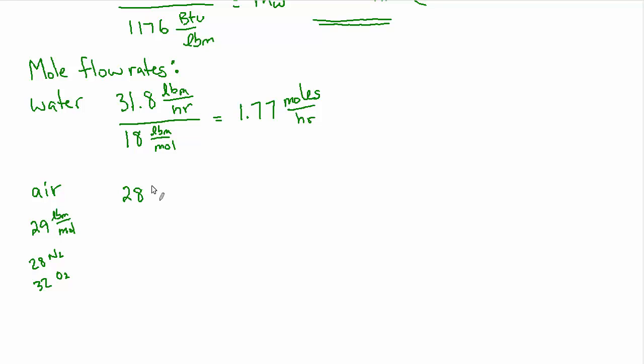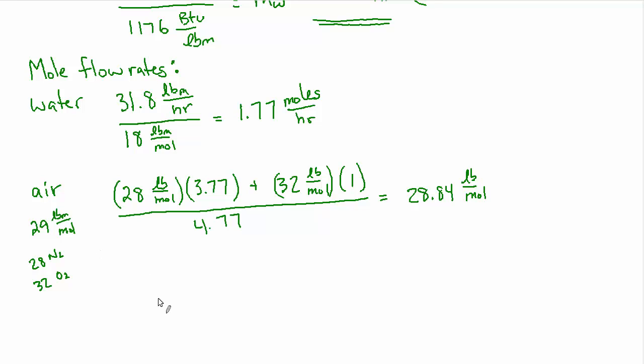And this is just a little reminder. You don't have to go through all this, but I'm going to show it because I think it's really helpful to recall this. So if you have 28 pounds per mole for nitrogen and you know that there are 3.77 parts nitrogen for every one part oxygen. And I suggest you remember this for combustion problems. And there's 32 pounds per mole for oxygen and just one part of that. And in total that's 4.77 parts. So if you work that out, you get 28.84 pounds per mole, which is very close to the 29 estimate that we would have used.